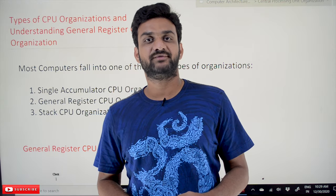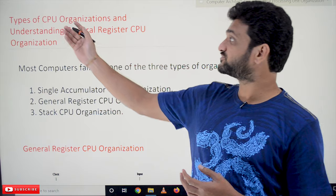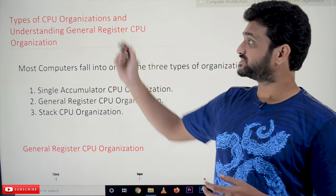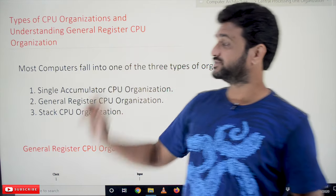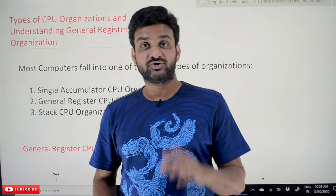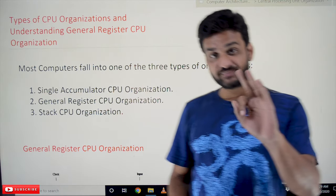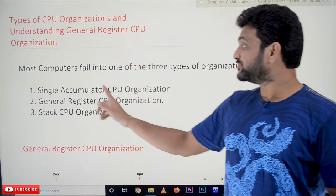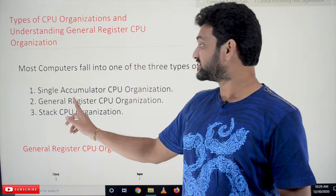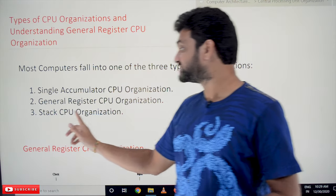Hi, welcome to Learning Monkey. I am Vikram. In this class we'll try to understand different types of CPU organization, and we'll try to understand about general register CPU organization. Most computers come under three categories of CPU organizations: single accumulator CPU organization, general register CPU organization, and stack CPU organization.